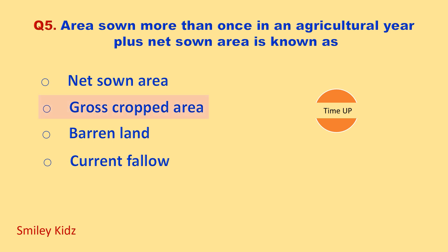Time up. The correct answer is gross cropped area. Gross cropped area is the area sown more than once in an agricultural year plus net sown area.